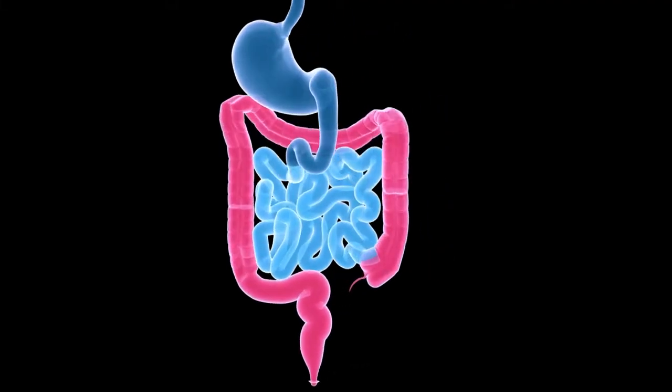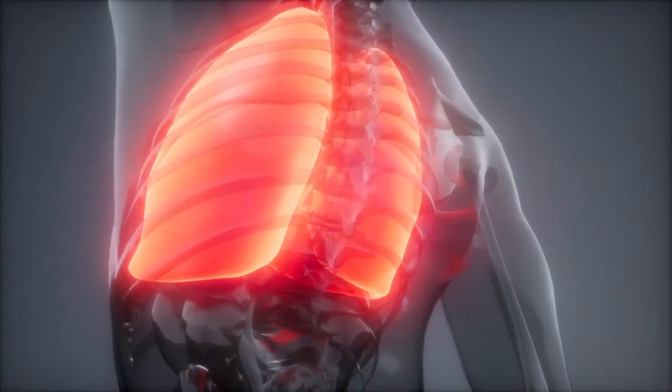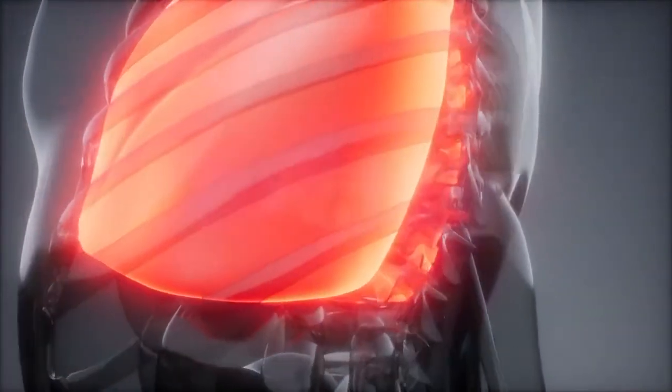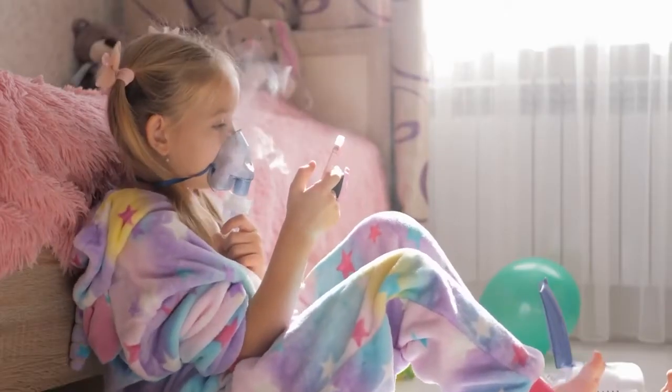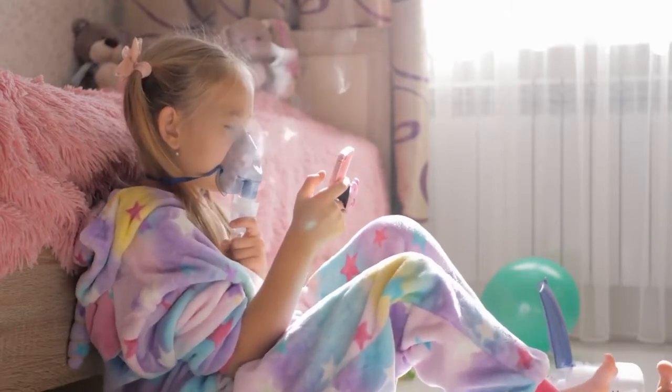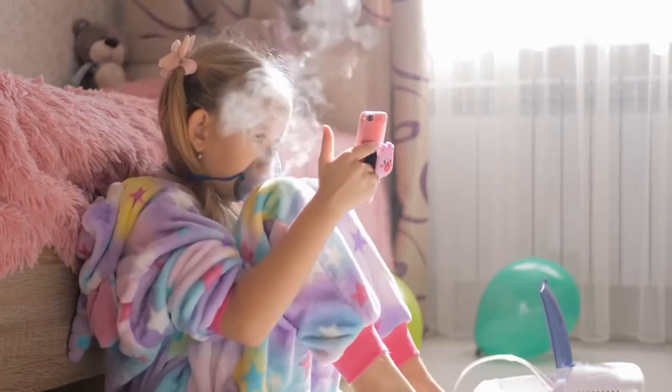85% of the deaths in cystic fibrosis are due to lung disease, and 15% of the time they die due to other causes. The patients have difficulty clearing the secretions in the lung, and when you cannot clear the secretions, bacteria get trapped in the lungs. It leads to destruction of the lung tissue, what we call bronchiectasis.